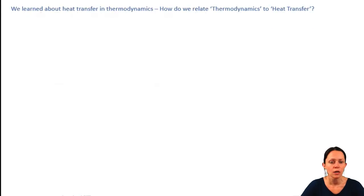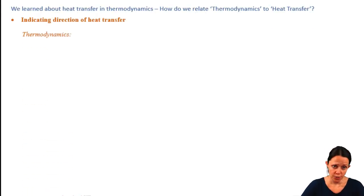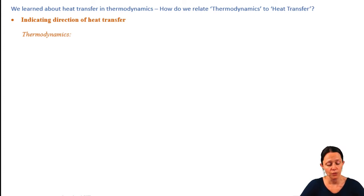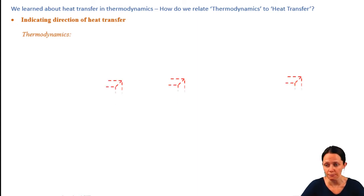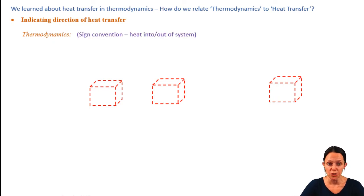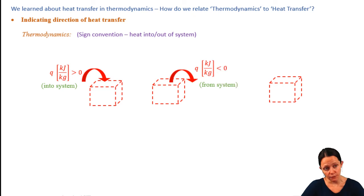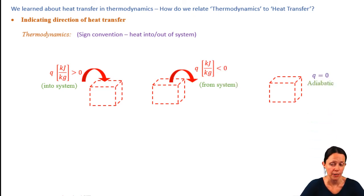In thermodynamics, we would define ourselves a control volume — our system — and using sign convention we said heat transfer is going to be positive if it's going into the system, negative if it's going out of the system, and we have an adiabatic process if q is equal to zero.